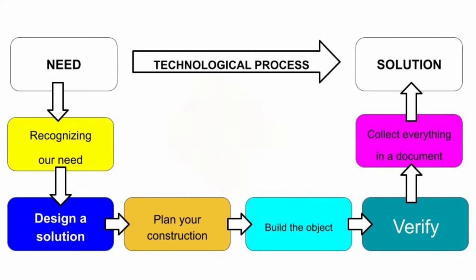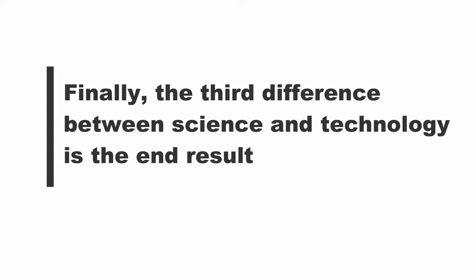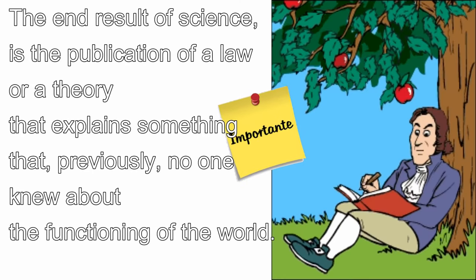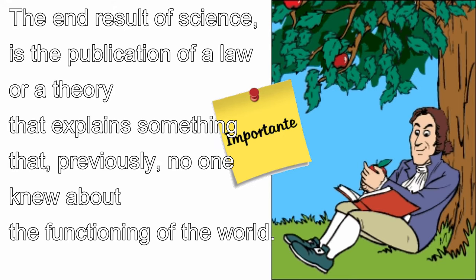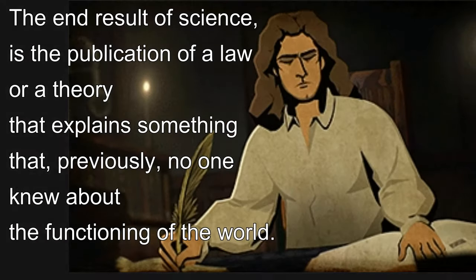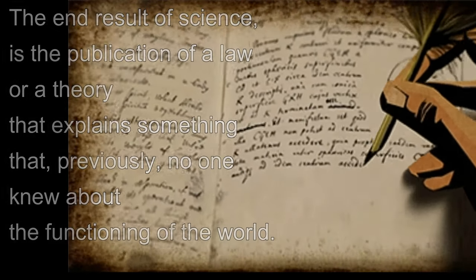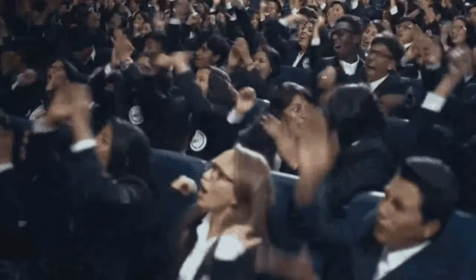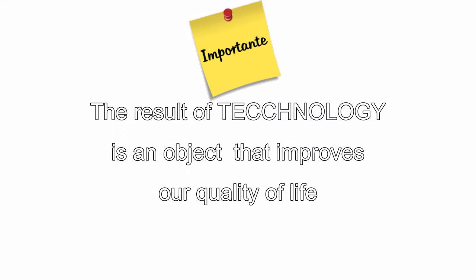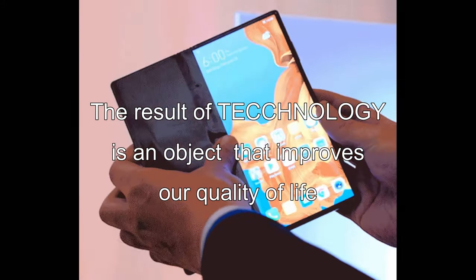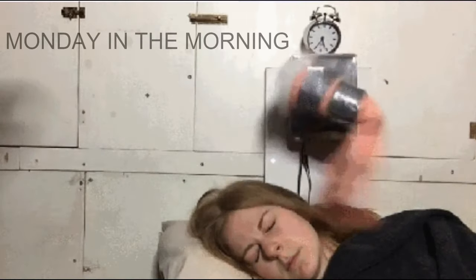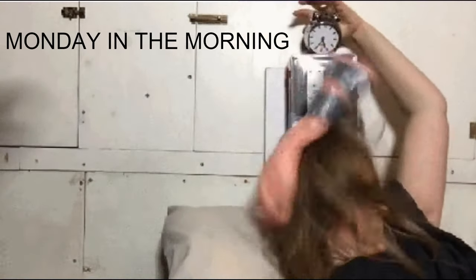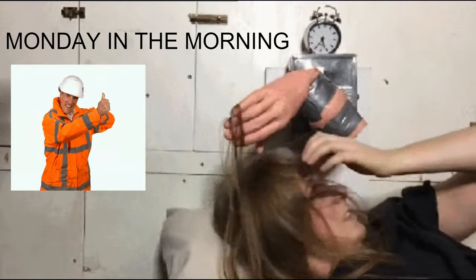And finally, the third difference between science and technology is the end result. The end result of science — what a scientist tries to achieve — is the publication of a law or a theory in a simple article, an article that explains something that previously no one knew about the functioning of the world, which makes that simple written article something quite important indeed. For an engineer or an architect, the result of his or her work is an object: a building, a telephone, a simple pen. They do not need to write a book or an article about it. What he or she provides is an object that improves our quality of life — a job that is, as you can see, also very important.